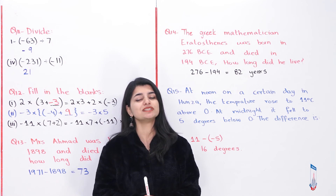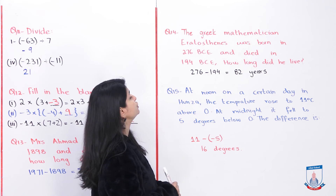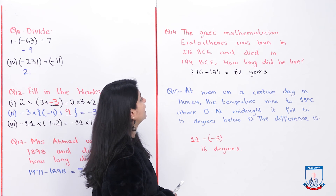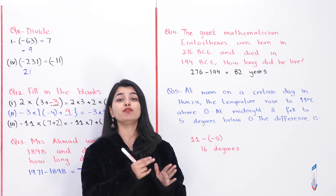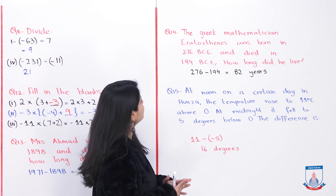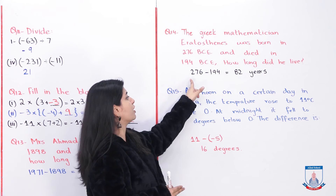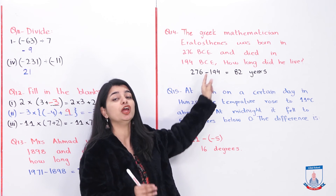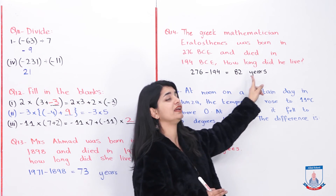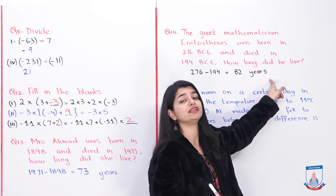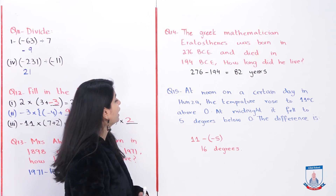Question number 14: The Greek mathematician Eratosthenes was born in 276 BC and died in 194 BC. How long did he live? Since BC dates go backwards, 276 BC is before 194 BC. Subtract 194 from 276: the answer is 82 years. So he lived for 82 years.